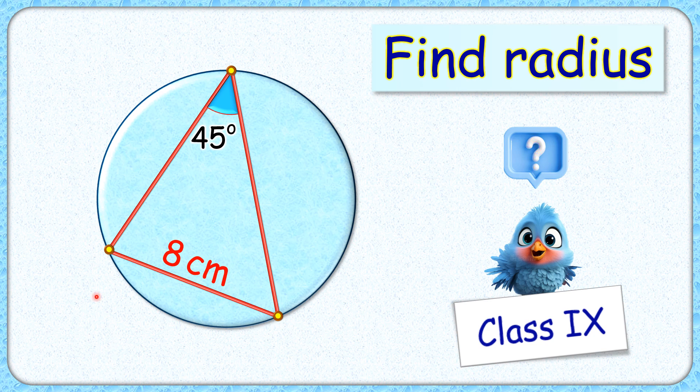Okay, this interesting question. We have got a chord length of 8 centimeters and this chord is sustaining an angle of 45 degrees at the circumference. The exciting part is, with this limited data, we have to find the radius of this circle.